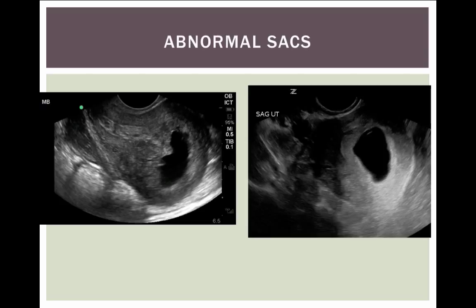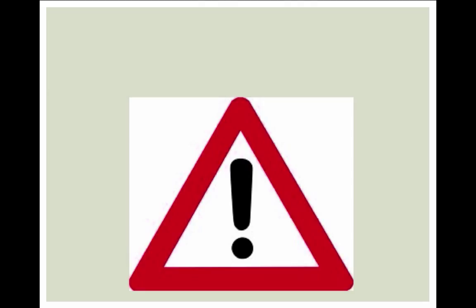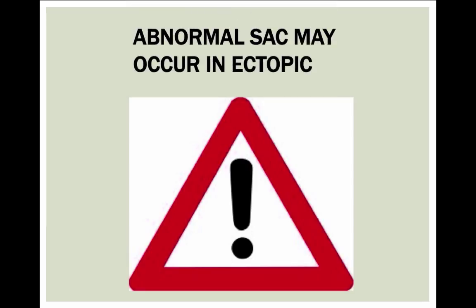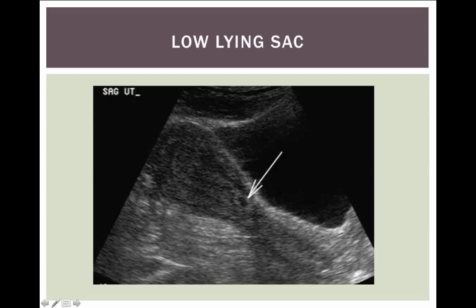Abnormal sacs. As the pregnancy progresses, the sac gets bigger in proportion to the contents inside of it. So when you see a large sac, you can measure it to get an estimated date, but if there's a large sac and the things inside of it don't correlate with how large it is, that's a poor prognosis. We should be seeing some kind of fetal pole in a sac this size. Make sure you've gotten good views of the adnexa completely when you see an abnormal sac.